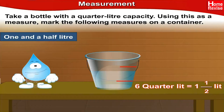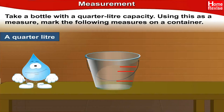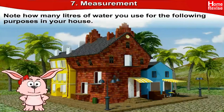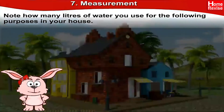Now let us mark one and a half liters on the container. The last measure is a quarter liter, and it is the simplest because we already have a quarter-liter capacity bottle. So we will fill the bottle one time, pour it into the container, and mark it. Note how many liters of water you use for the following purposes in your house — for bathing.